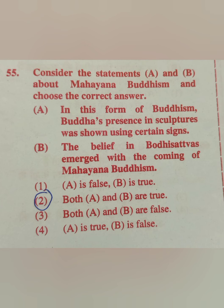Question 55: Consider statements A and B about Mahayana Buddhism. Statement A: In this form of Buddhism, Buddha's presence in sculptures was shown using certain signs. Statement B: The belief in Bodhisattvas emerged with the coming of Mahayana Buddhism. The correct answer is option 1 — A is false, B is true. The use of signs was in Hinayana, not Mahayana.